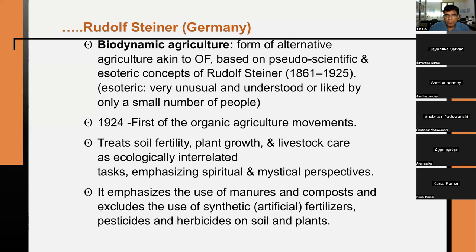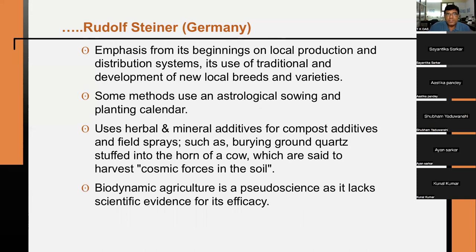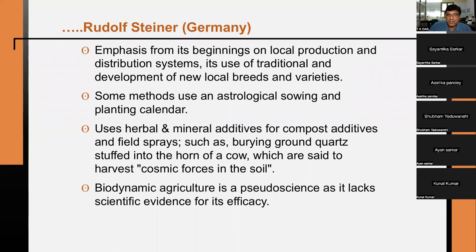Biodynamic agriculture, starting in 1924, was the first organic agriculture movement. It treats soil fertility, plant growth, and livestock care as ecologically interrelated. It emphasizes use of manures and compost and excludes synthetic fertilizers, and also avoids pesticides and herbicides. Some methods use an astrological sowing calendar and herbal or mineral additives — such as burying ground quartz stuffed into a cow horn — which are said to harvest cosmic forces. Biodynamic agriculture is a pseudoscience as it lacks scientific evidence for its efficacy.